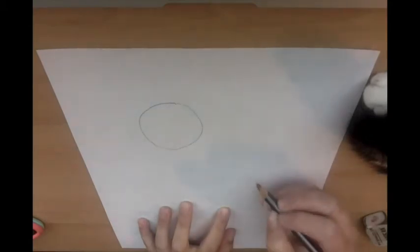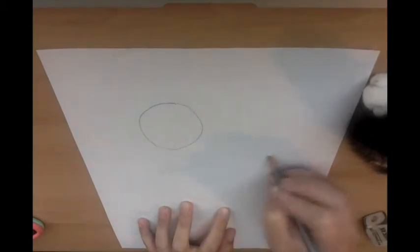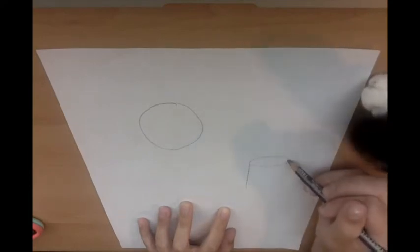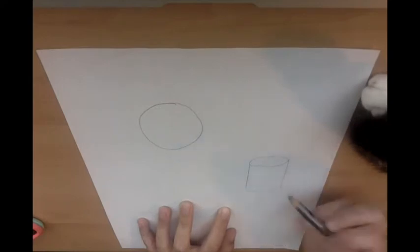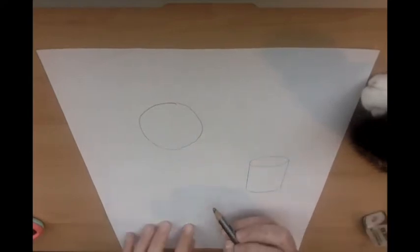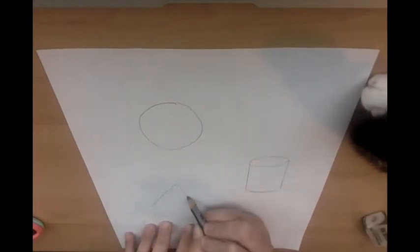Our first shape we're going to do is a circle and turn it into a sphere. Our second shape is going to be kind of a rectangle shape turned into a cylinder, an open cylinder. And our third shape is going to be a triangle turned into a cone.